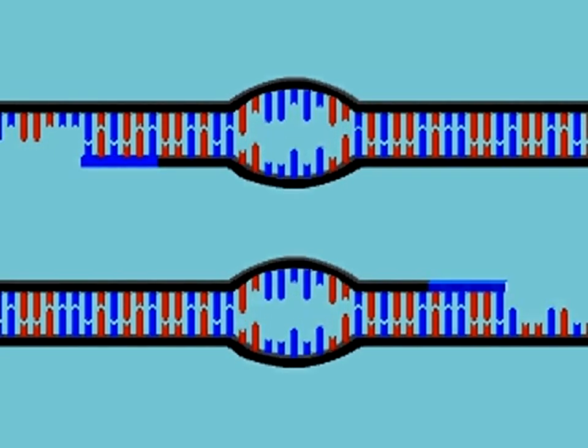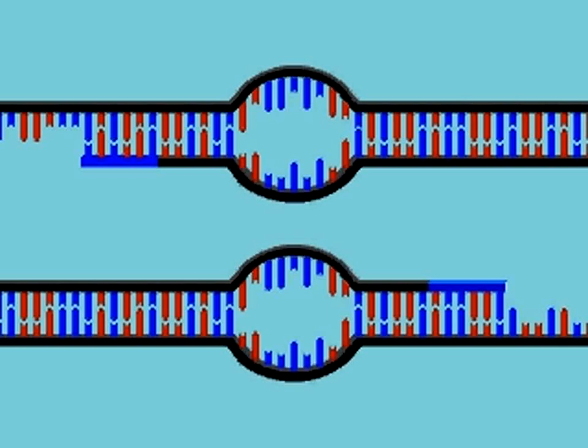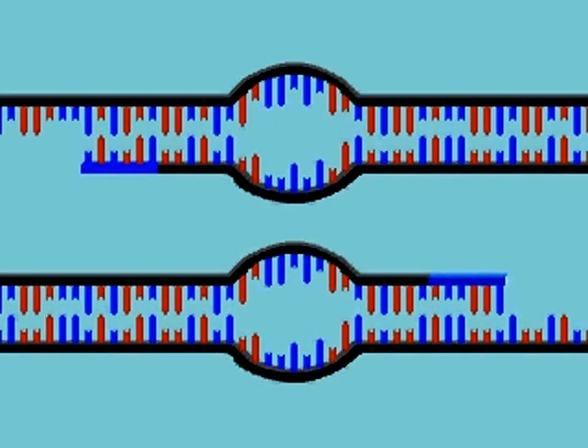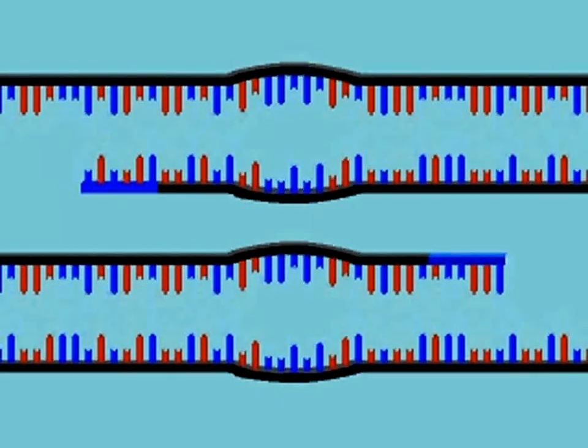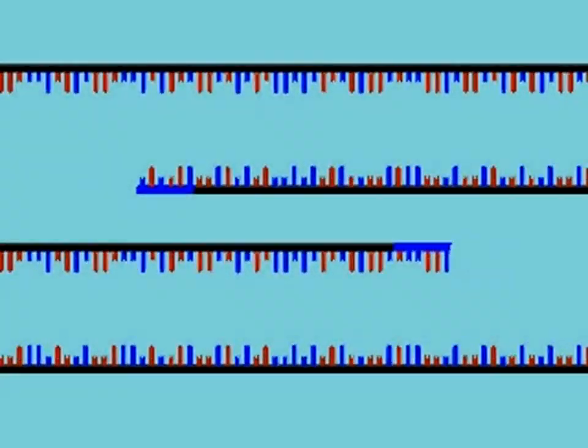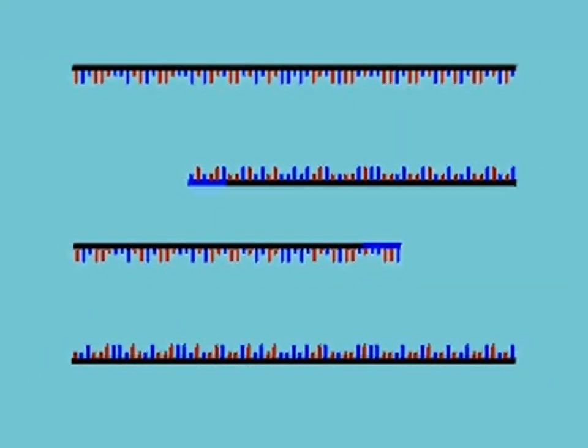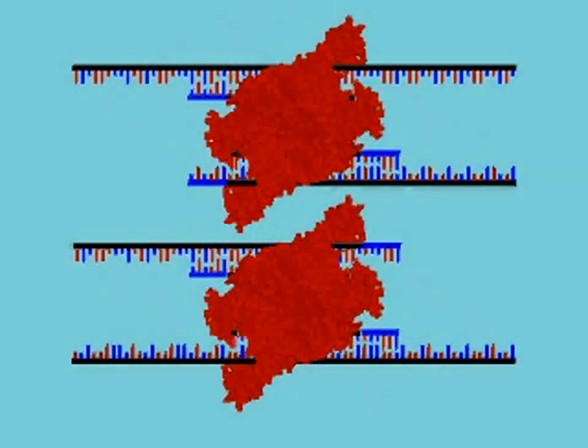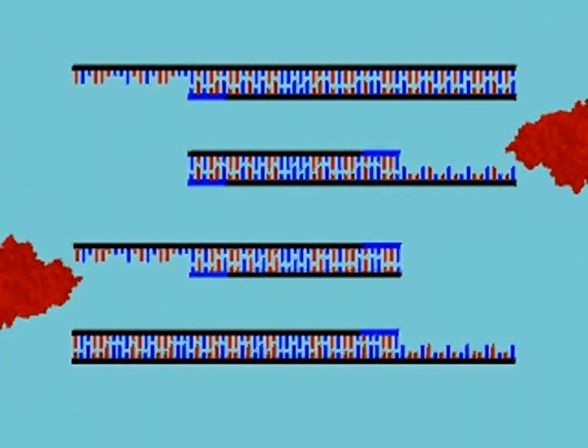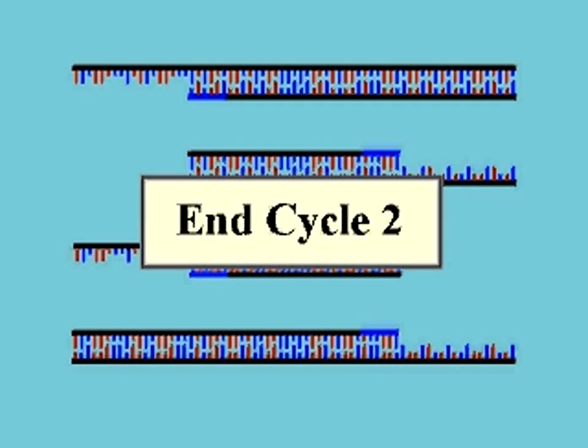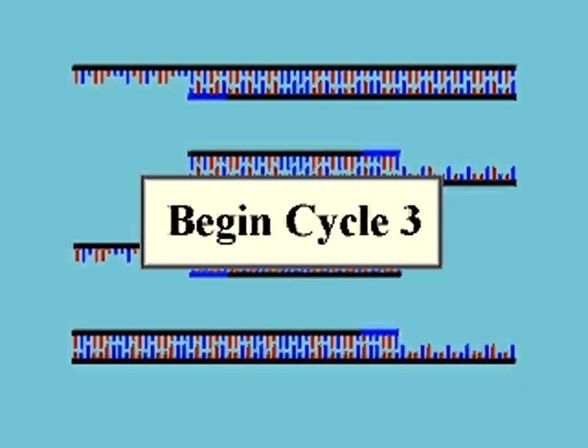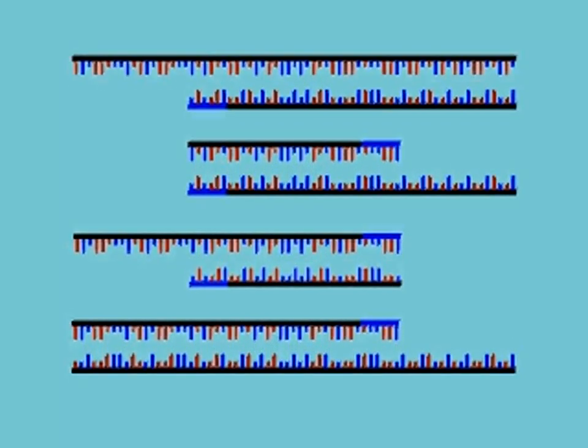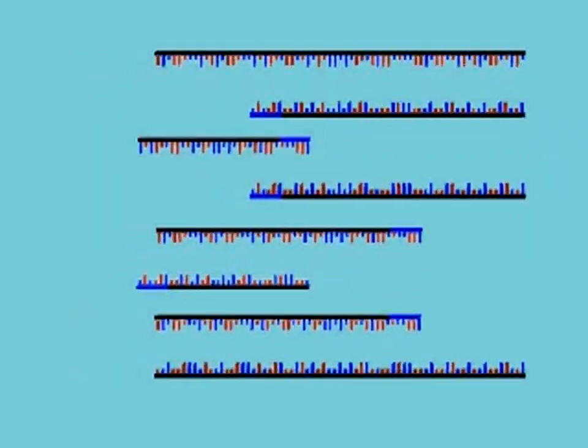The DNA is denatured, cooled to allow hybridization of the primers, and heated to 72 degrees to allow DNA synthesis. In cycle 3, the DNA is denatured, primers hybridize, and DNA is synthesized. At the end of cycle 3, two of the products contain only the region between the oligonucleotides.